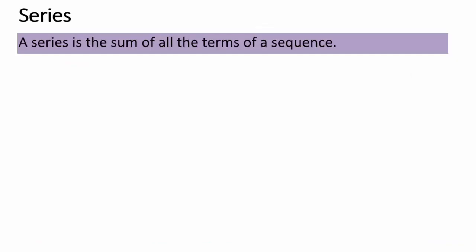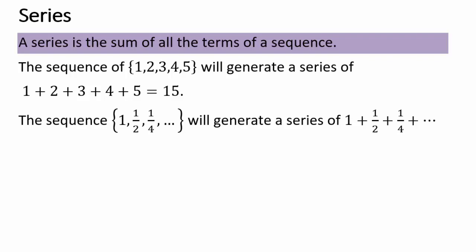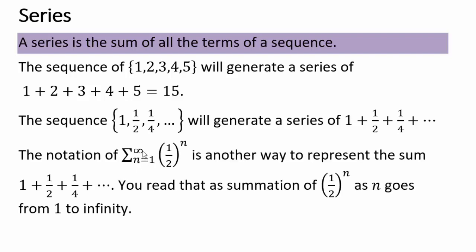When you take the terms of a sequence and add them all up, it forms a series. For example, the sequence 1, 2, 3, 4, 5 gives the series 1 + 2 + 3 + 4 + 5. A compact notation mathematicians use is the summation sign (Σ). For instance, Σ from n=1 to ∞ of (½)^n represents 1 + ½ + ¼ + …. You read it as: the summation of (½)^n as n goes from 1 to infinity.